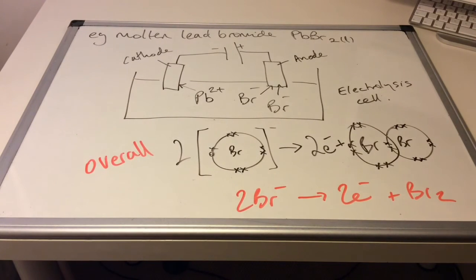Now, because the bromide ions have lost electrons, so each bromide ion lost an electron each, we call this an oxidation process because oxidation involves the loss of electrons.